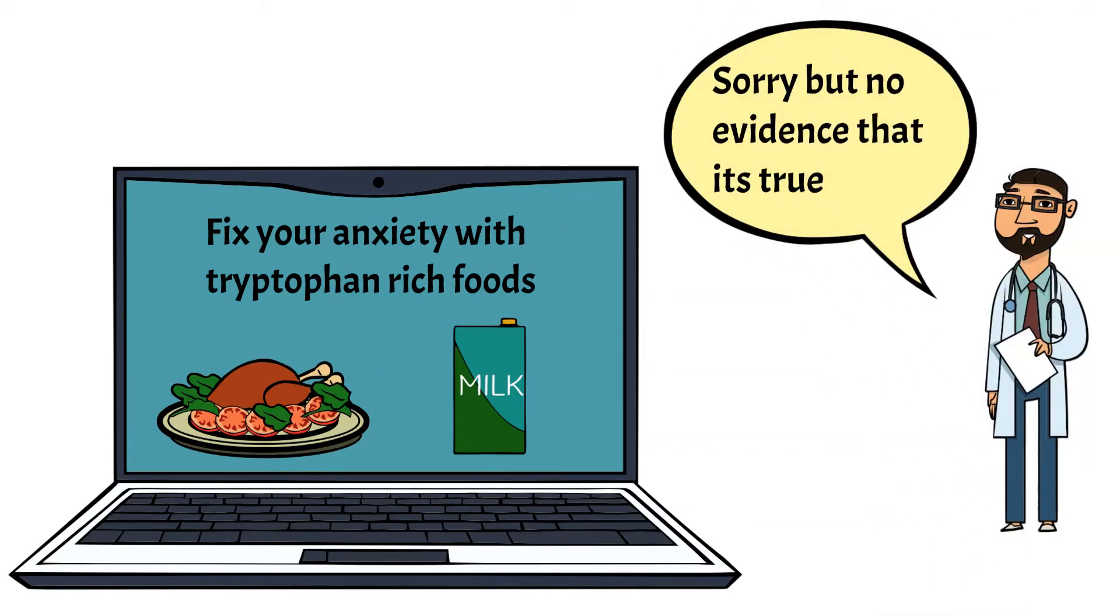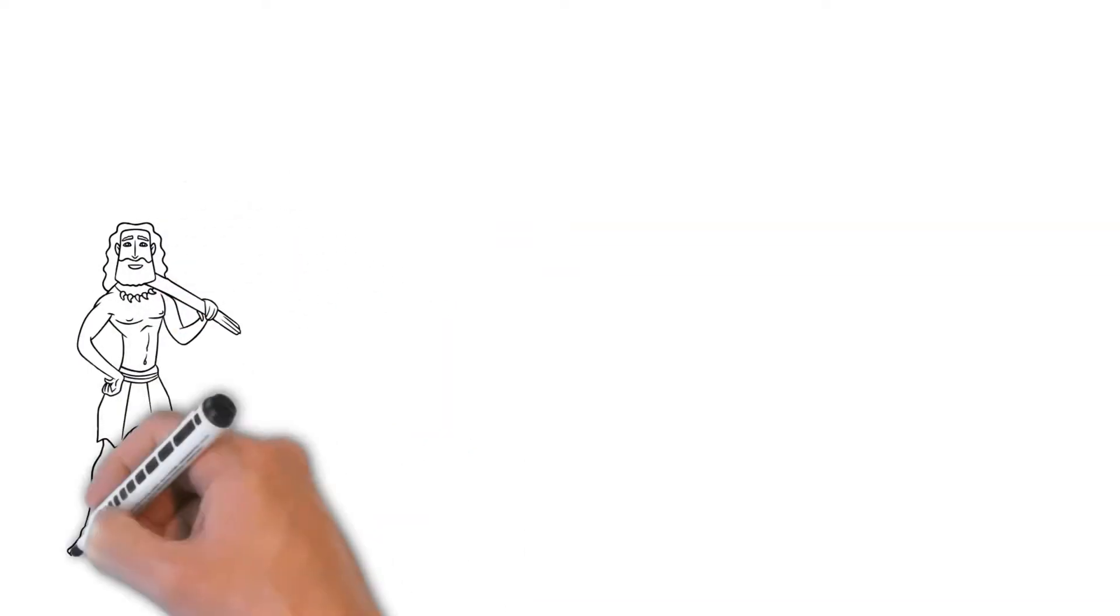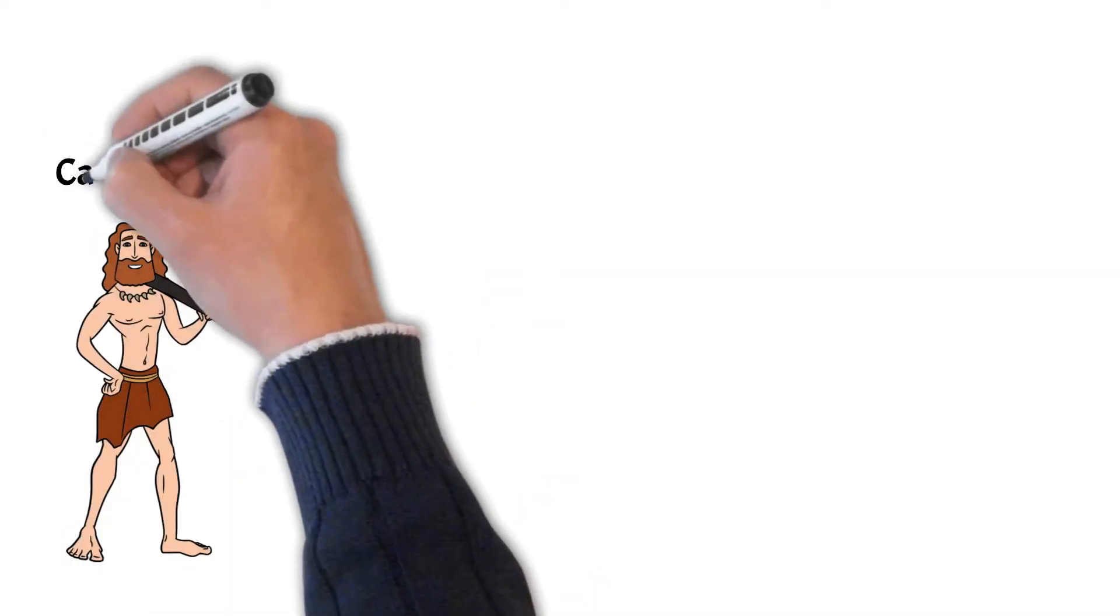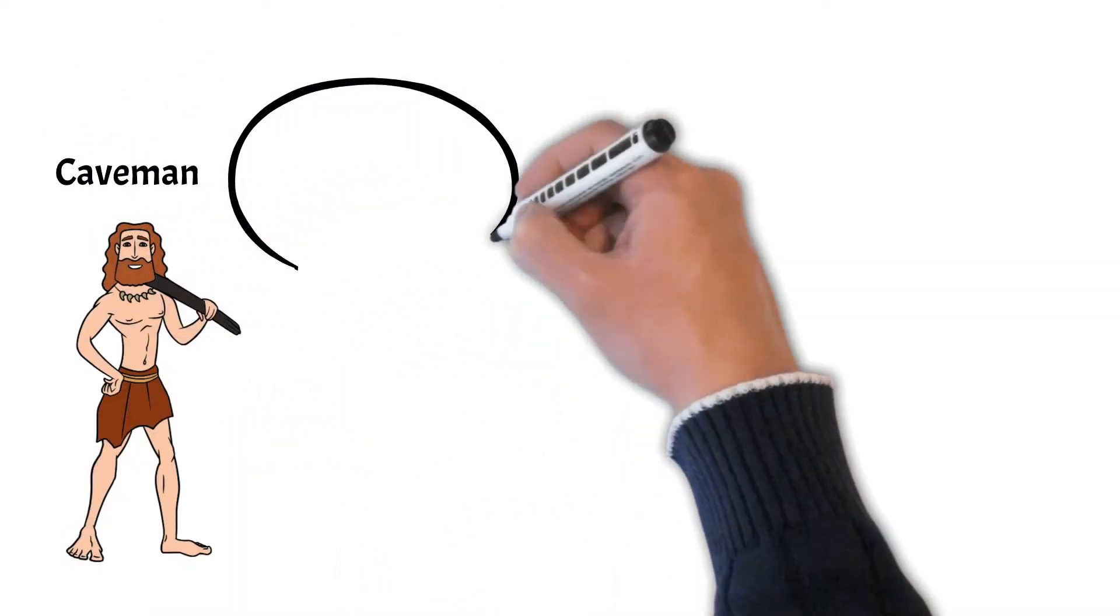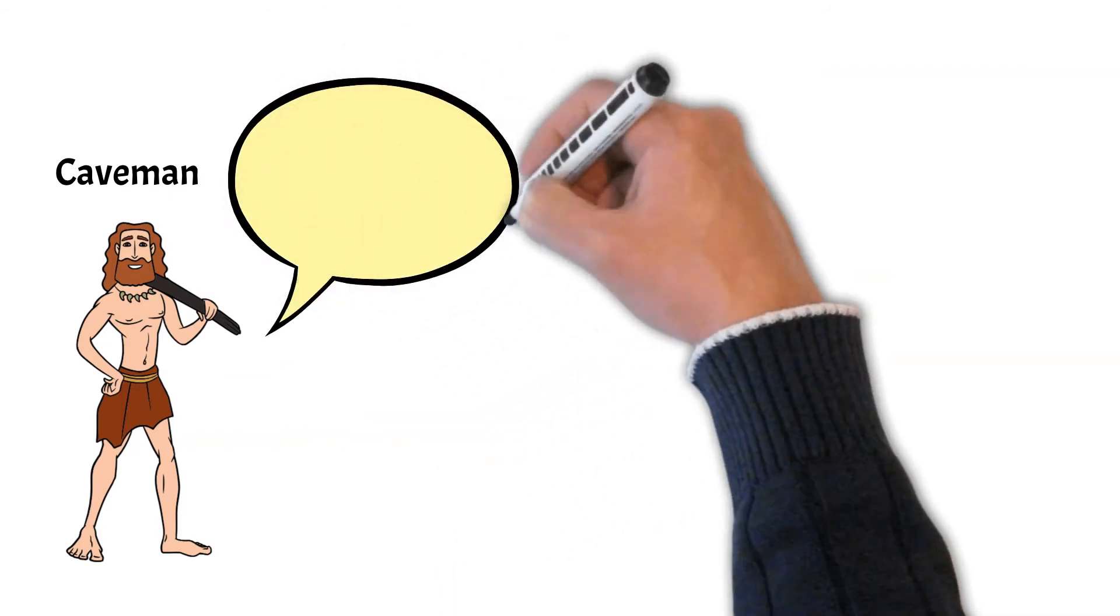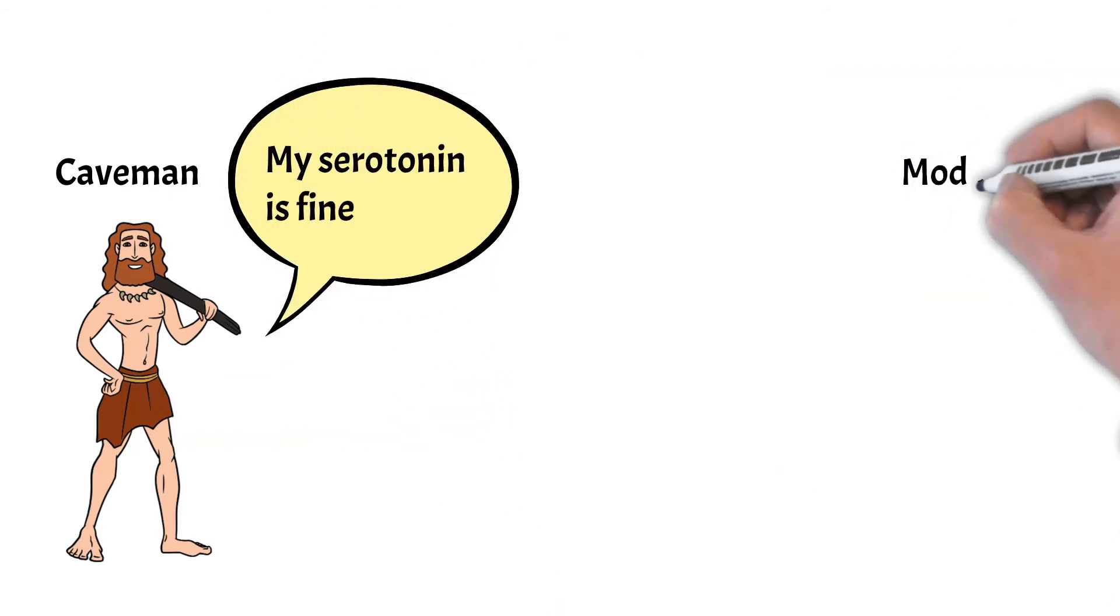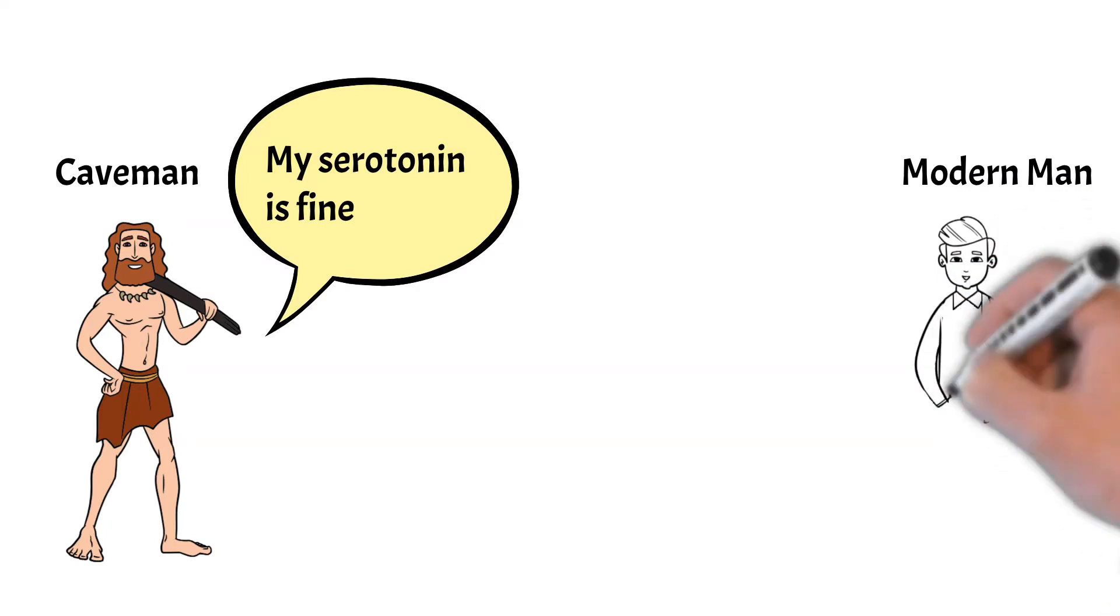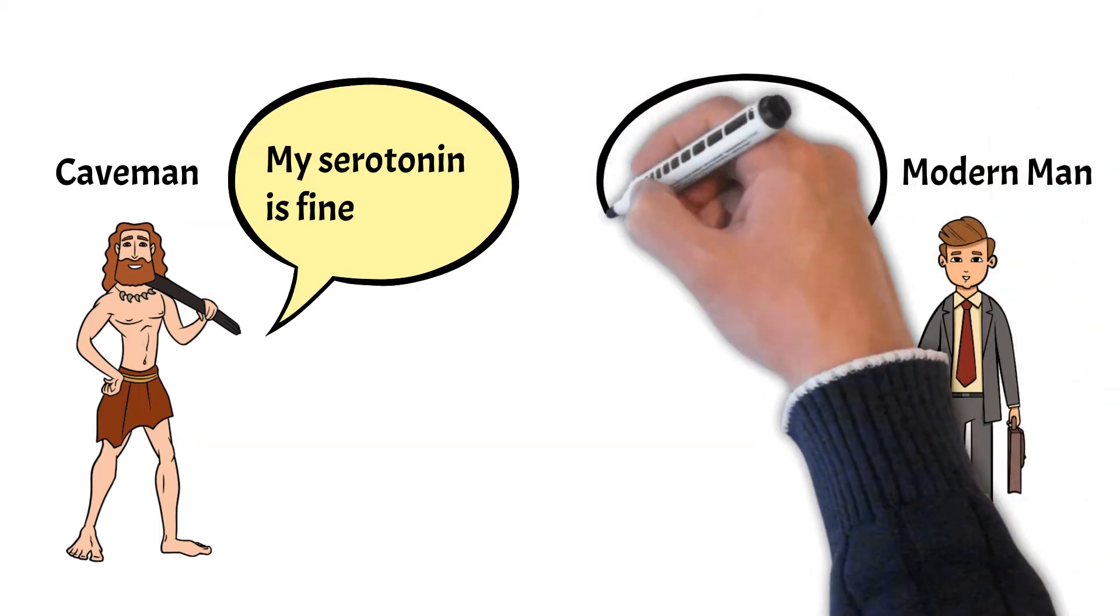Equally, studies deliberately depleting serotonin levels also showed no adverse effects. But let's assume that low serotonin is at least playing some role in anxiety and depression. Why should it be low? And why is there an epidemic of anxiety and depression in the modern world? Has evolution suddenly changed our serotonin levels just in the last 100 years or so?